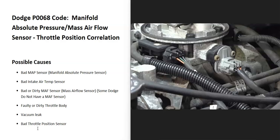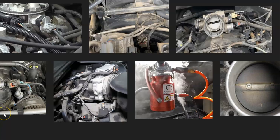Another thing that can sometimes cause this issue is a bad throttle body position sensor. While not too common, it can throw things off. If you've gone through everything else and still can't get the code to clear, then test or replace that throttle position sensor. That's basically the overview of how you go about fixing a Dodge with the P0068 code. If you have anything to add, comment below, and if you have questions, ask and I'll try to answer them.